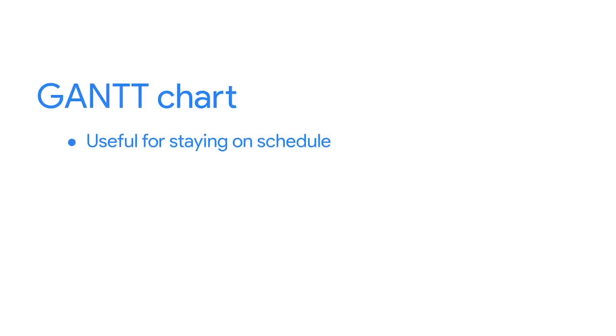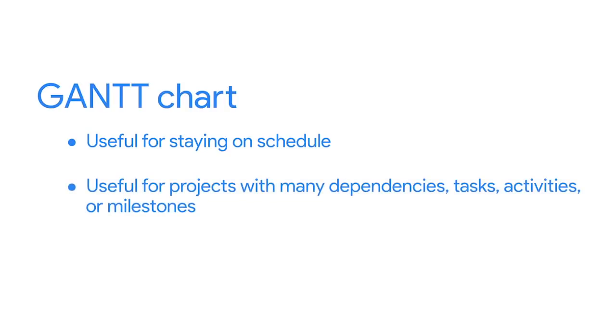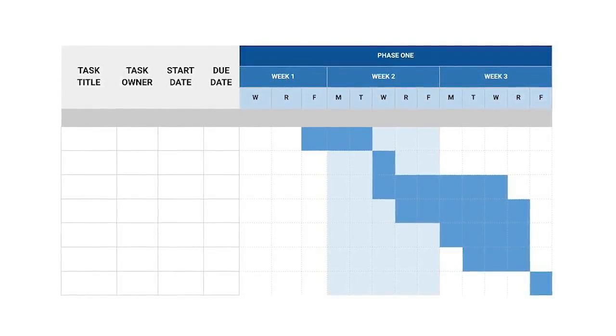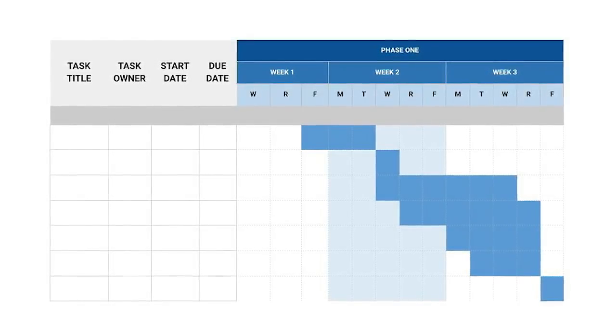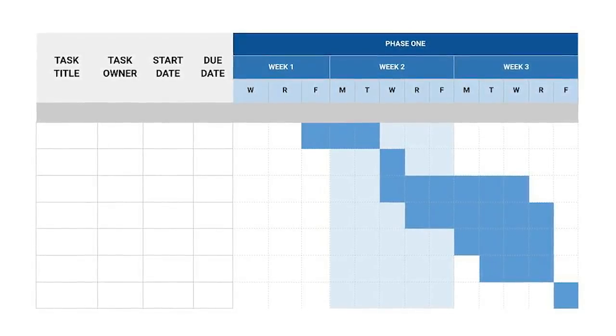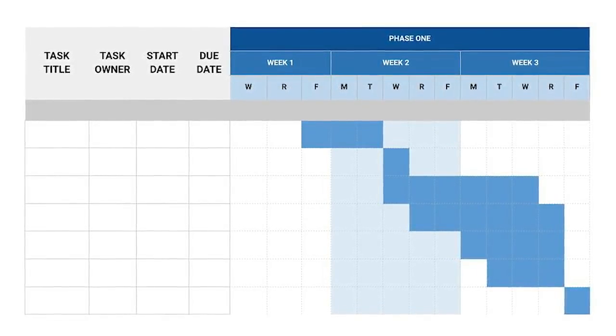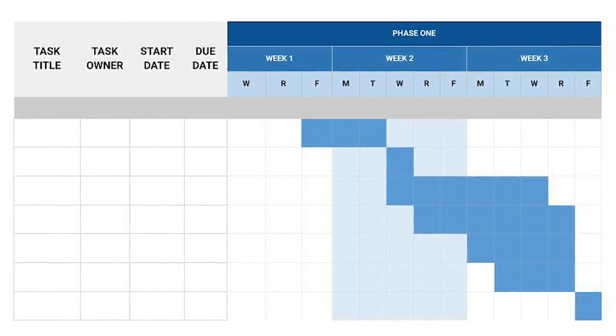Perhaps the most common tracking method of all is the Gantt chart. It's a tried and true tool to keep your project on track. A Gantt chart measures tasks against time and includes useful information like who will own each task and what the order of the tasks should be. It's a useful chart for staying on schedule and for projects with many dependencies or tasks or activities or milestones that are reliant on one another. It's also helpful for teams with a lot of people because ownership and responsibilities are explicitly laid out visually. Each task is represented by a horizontal progress bar, and the bars are stacked on top of each other to denote that the task at the top must be completed before the next one. Gantt charts typically live in your project plan and are updated as the project progresses.